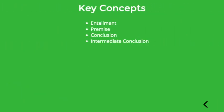Some of the key concepts we introduced in this video are entailment — that special relationship that holds between sentences wherein if you accept some of the statements as true, you have to accept the other statement if you're going to be rational — and then we talked about some of the parts of an argument, such as the premise, the conclusion, and the intermediate conclusion.